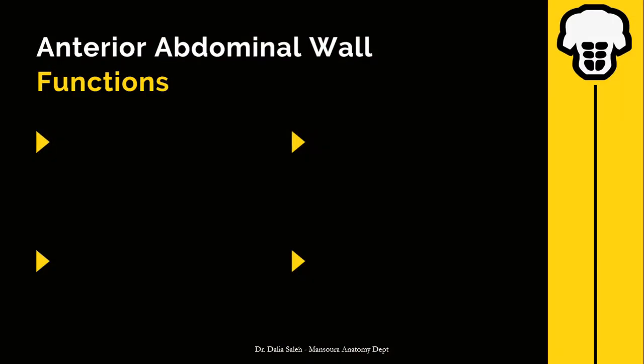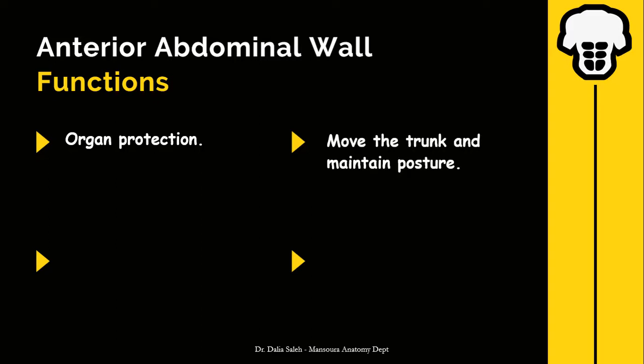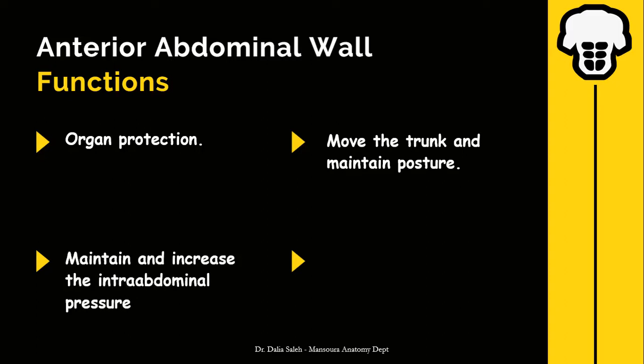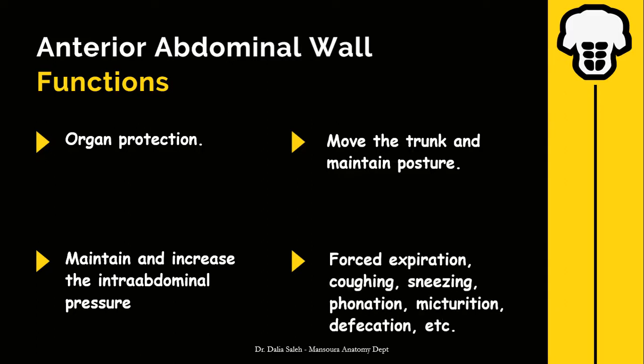The general functions of the anterior abdominal wall: first, organ protection — since the anterior abdominal wall lacks a skeletal component, the muscles and collagen component serve in organ protection, especially the tonic contraction of the internal oblique muscle. They also move the trunk and maintain body posture. They maintain and increase intra-abdominal pressure, important in forced expiration, coughing, sneezing, phonation, micturition, defecation, etc.